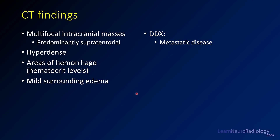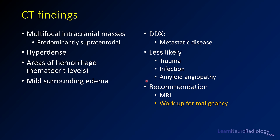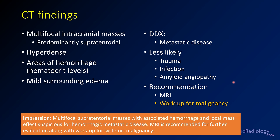The differential here — we have to think about metastatic disease. Other things: trauma, but the distribution is unusual, and if you had trauma this bad you would know from the history. Infections such as septic emboli can hemorrhage like this. Amyloid is definitely something to think about — you can have multiple hemorrhages, but this extent would be unusual. Definitely recommend an MRI and think about a systemic workup for malignancy. In your CT impression, describe this as multifocal supratentorial masses with hemorrhage and mass effect, suspicious for hemorrhagic metastatic disease. Recommend MRI of the brain to look for other lesions and work up for systemic malignancy.